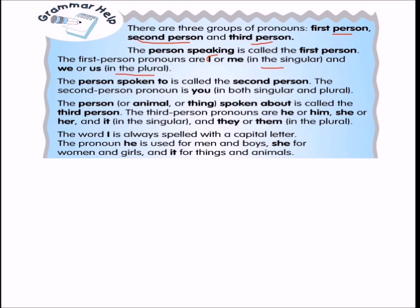Second person: the person spoken to. The second person pronoun is 'you.' 'I am talking about you. Look at you.' These are both singular and plural — you can use 'you' for one person or for many people.